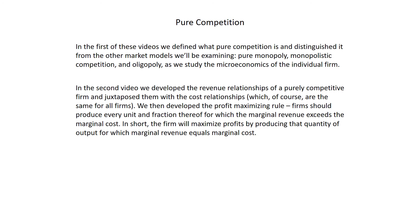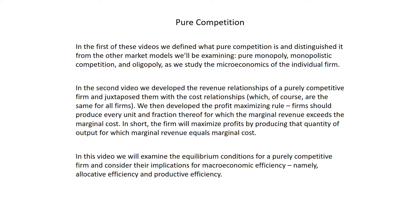In the second video, we developed the revenue relationships of a purely competitive firm and juxtaposed them with the cost relationships, which are the same for all firms. We then developed the profit-maximizing rule: firms should produce every unit for which marginal revenue exceeds marginal cost. In short, the firm will maximize profits by producing that quantity of output for which marginal revenue equals marginal cost. In this video, we will examine the equilibrium conditions for a purely competitive firm and consider their implications for macroeconomic efficiency, namely allocative efficiency and productive efficiency.